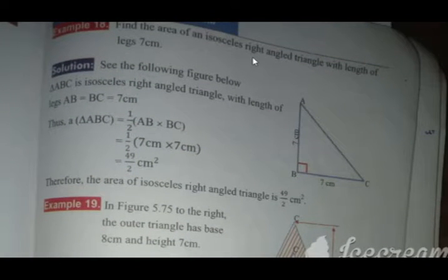Here is an example of the triangle. Find the area of the isosceles right angle triangle with the length of the legs 7 cm.